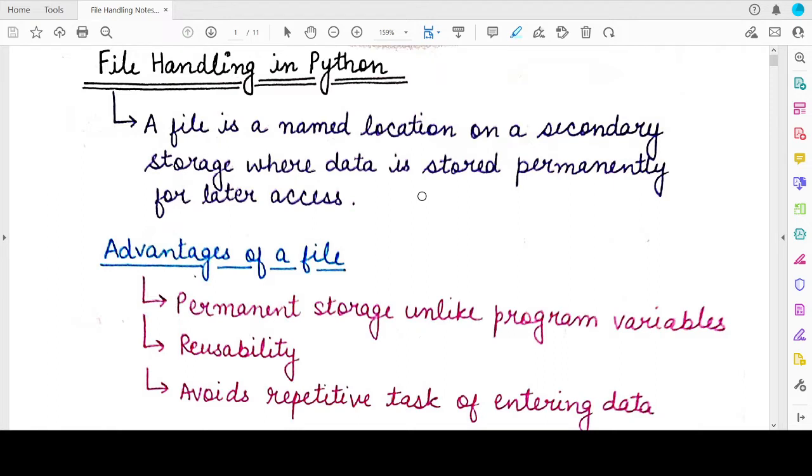But as soon as you end the program, the variables are lost, their values are lost and there is no way of retaining them permanently. So a file is a solution to this problem. A file is a location in memory and this memory is not the primary memory, it is the secondary memory.